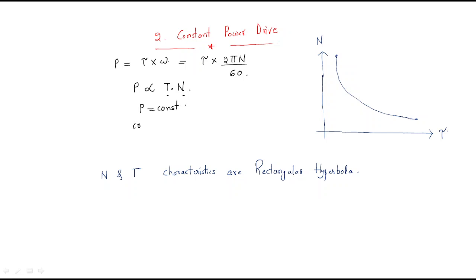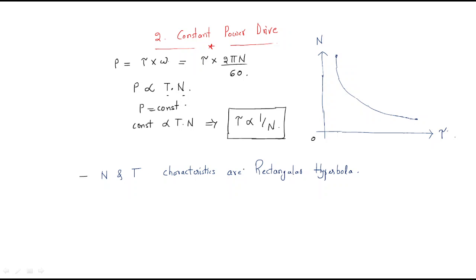Since power is constant, we have: P = T × ω = constant, which means torque is inversely proportional to speed. For low torque the speed is high, and for high torque the speed is low. Therefore the torque-speed characteristic follows a rectangular hyperbola.